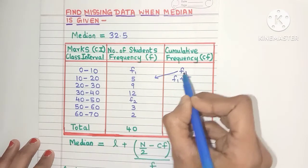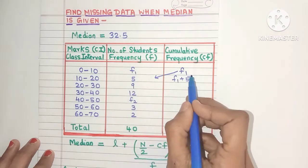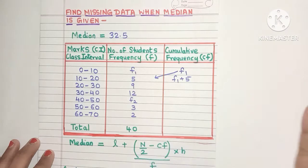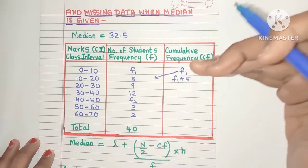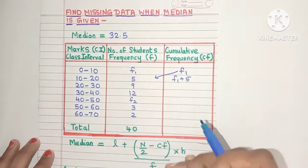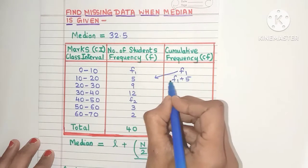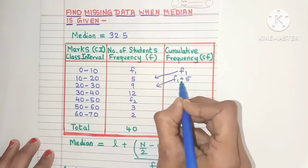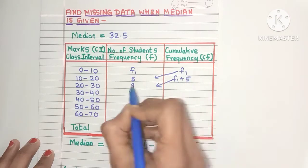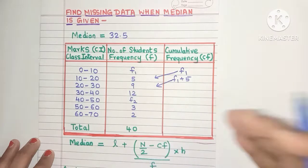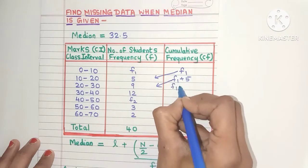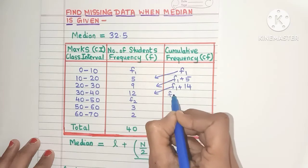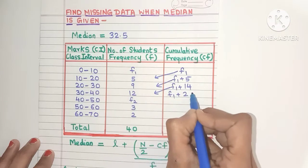Because f1 is a variable and 5 is a constant, we just leave it as f1 plus 5. Now repeat this process for all the class intervals. For the next class interval we get f1 plus 5 plus 9; since 5 and 9 are both constants we can add them to get f1 plus 14. For the next class interval we get f1 plus 14 plus 12, which is f1 plus 26.